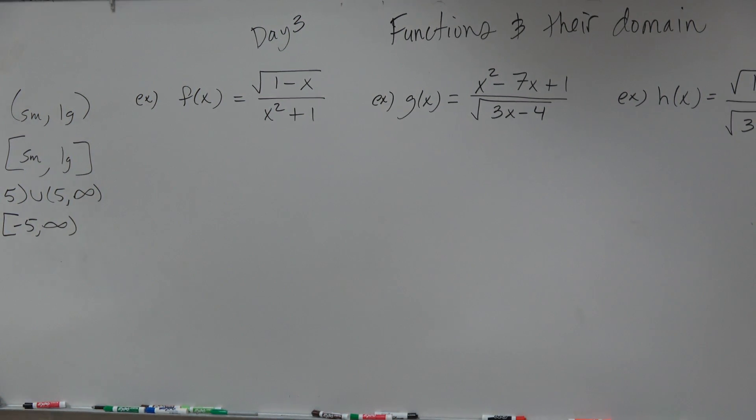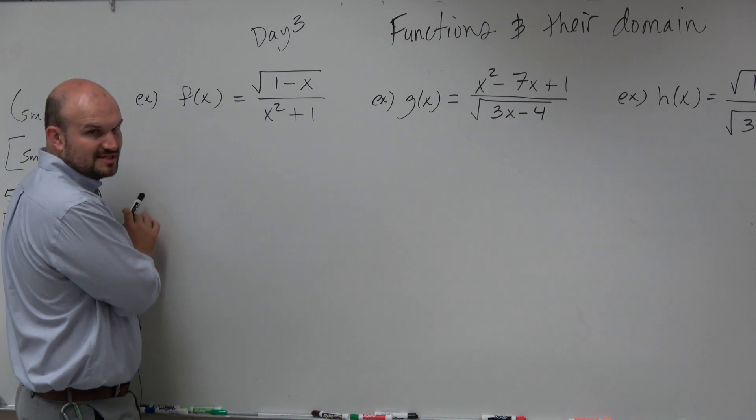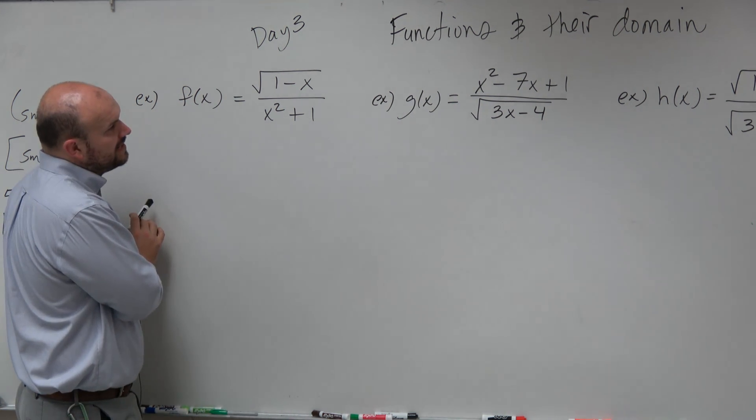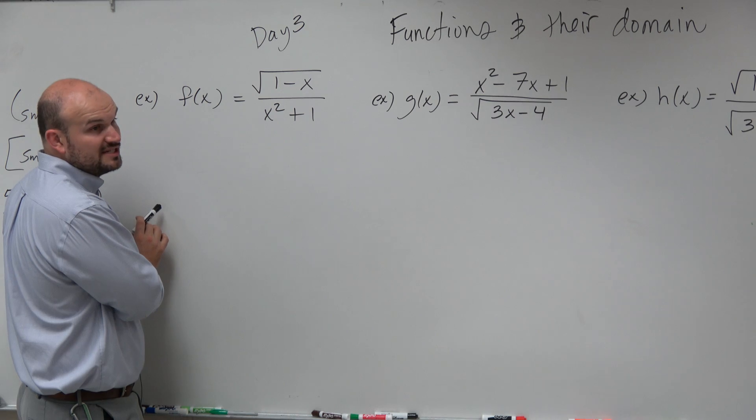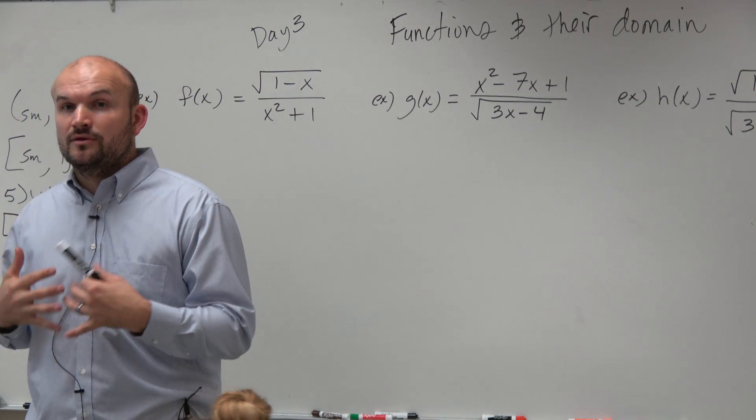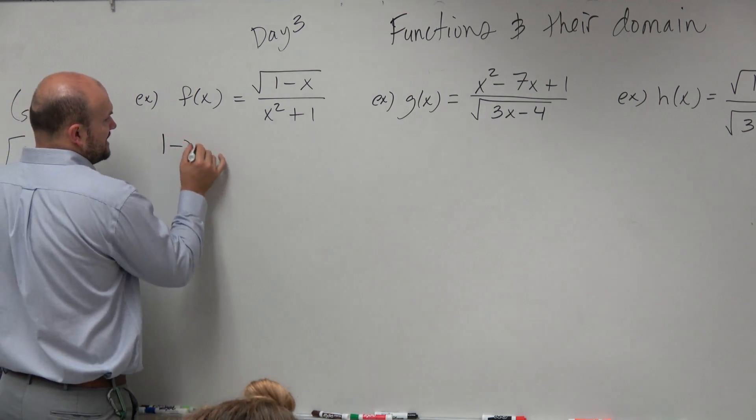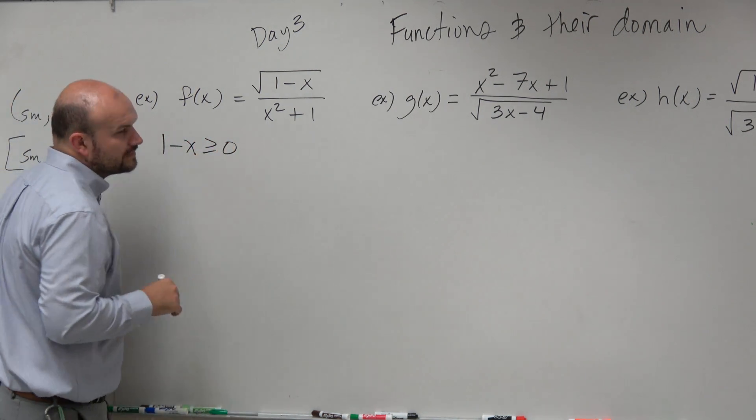All right, so looking at a problem like this, the main important thing is we see different constraints. We see that there is under a radical. Any time we have a radical, we know that constraint number one is looking. So we want to say 1 minus x has to be greater than or equal to 0.